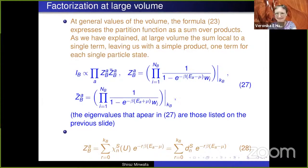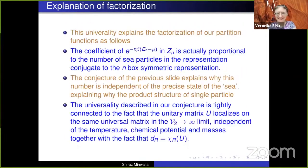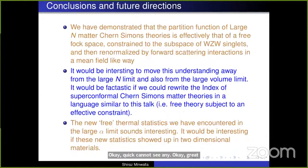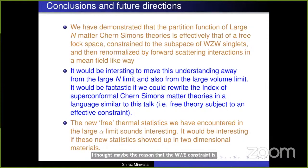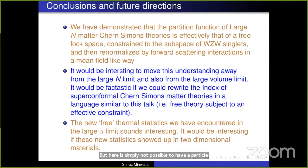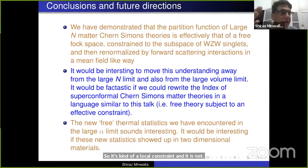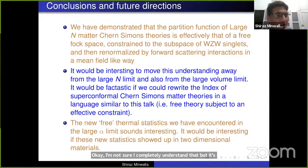I believe the reason underlying this is that the singlet constraint is greatly cutting down degrees of freedom. The Wess-Zumino-Witten singlet constraint cuts down degrees of freedom much more severely than ordinary Gauss-Law constraints. As is apparent from the fact that in the infinite volume limit, the Gauss-Law singlet constraint just goes away, but the WZW constraint stays.